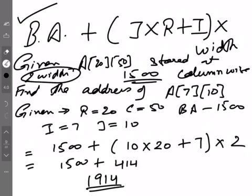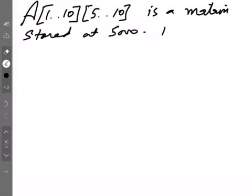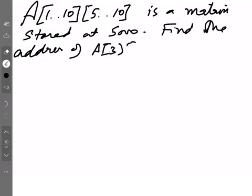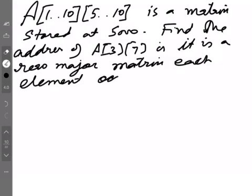Another twist that comes in questions: one I showed you earlier where you're given an element's address and need to find the base address. Another is when the matrix is given like this: stored at 5000, find the address of A(3,7) if it's a row-major matrix, each element occupying four bytes.